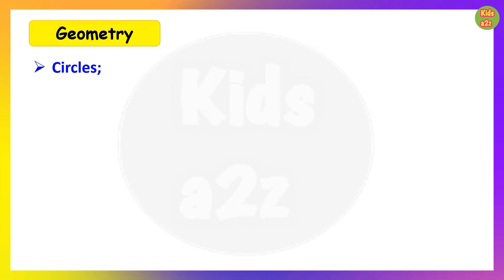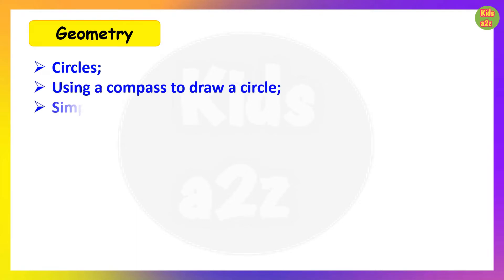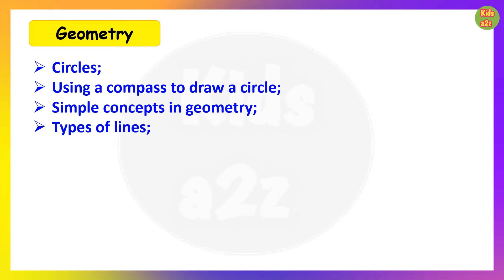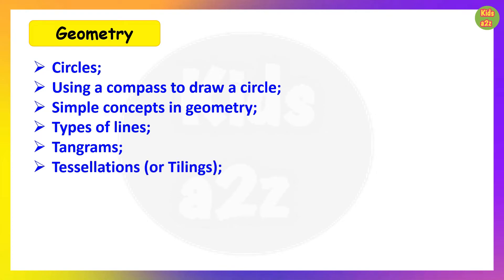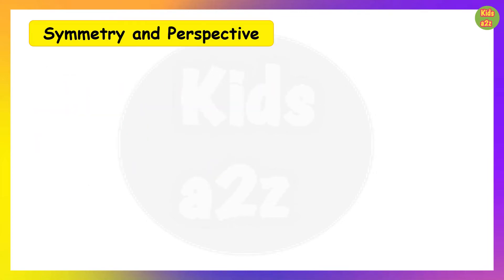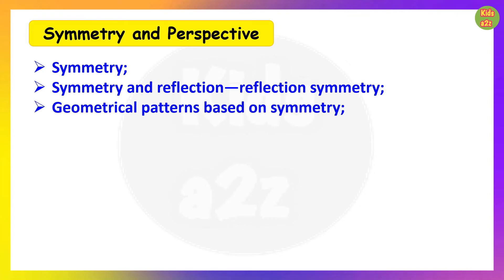Under Geometry, they will learn to identify the center, radius and diameter of a circle, and how to use a compass to draw a circle. They will learn simple geometry concepts including types of lines — identifying intersecting, perpendicular and parallel lines. They will use tangrams to create different shapes, tessellations or tilings to tile a given region using one or more shapes, and nets to make cubes and cuboids. Under symmetry and perspective, they will learn to identify symmetrical shapes, symmetry and reflection, and geometrical patterns based on symmetry — observing, identifying and extending those patterns.